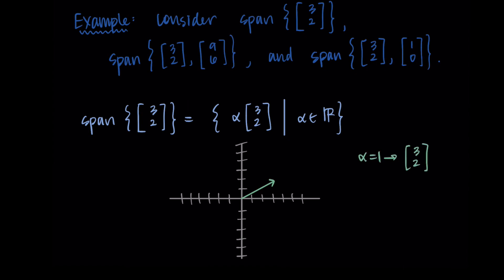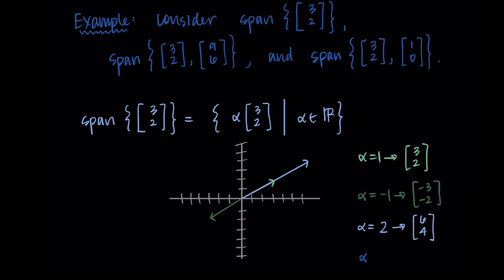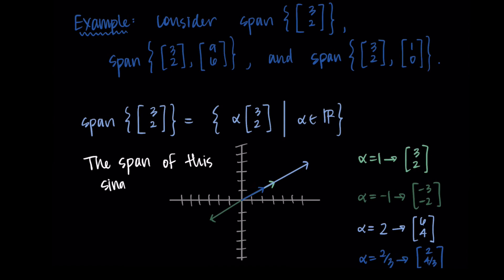We can consider other alpha values. Alpha equals negative 1 gives the vector [-3, -2]; alpha equals 2 gives [6, 4]; and a non-integer like alpha equals 2/3 gives the vector [2, 4/3]. Notice that for any alpha we choose, we always get a vector that lies on the same line. We're not branching out in any way — our only options are to scale along this line.